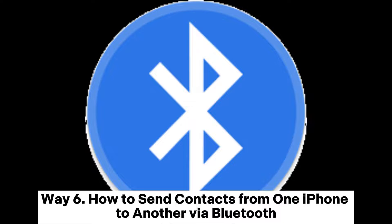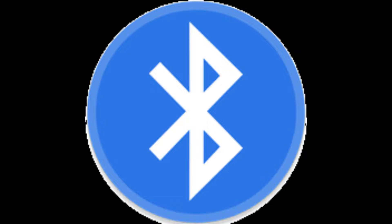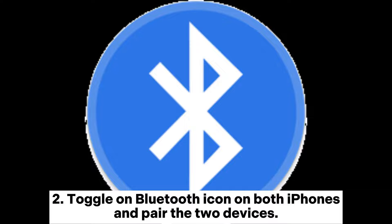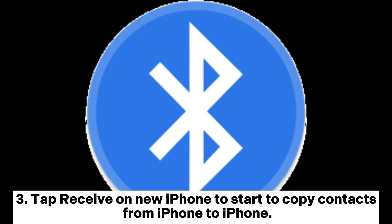Way 6: How to send contacts from one iPhone to another via Bluetooth. 1. Install Bluetooth Share Free on both iPhones. 2. Toggle on Bluetooth on both iPhones and pair the two devices. After pairing, launch Bluetooth Share Free on both devices. Go to the Contacts app from your old iPhone, select desired contacts, and choose Send by Bluetooth. 3. Tap Receive on your new iPhone to start copying contacts from iPhone to iPhone.